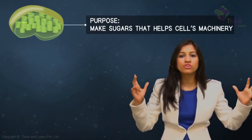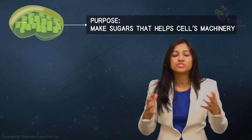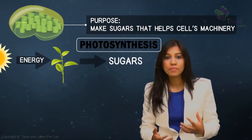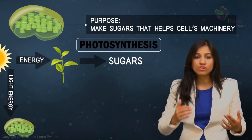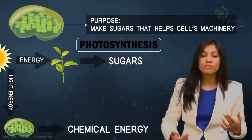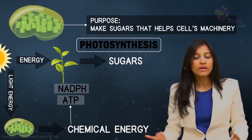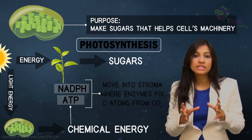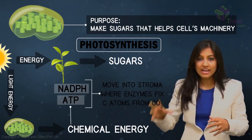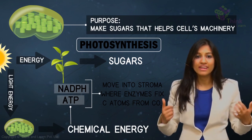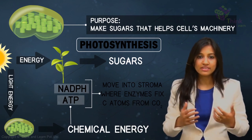In case you did not know how photosynthesis happens, the purpose of the chloroplast is to make sugar to feed the cell's machinery. Photosynthesis is the process of a plant taking energy from the sun and creating energy in the form of sugar. When sunlight hits a chloroplast, the chlorophyll molecules convert light energy into chemical energy found in components like ATP and NADPH. These energy-rich compounds move into the stroma where enzymes fix carbon atoms from carbon dioxide. The molecular reactions eventually create sugar and oxygen, which plants and animals use for food, energy, and respiration.